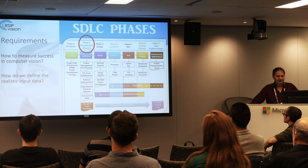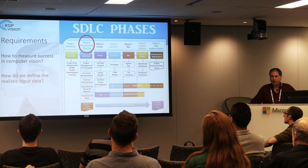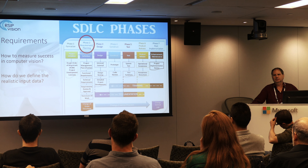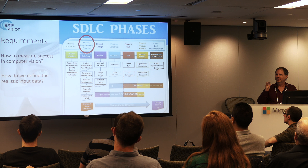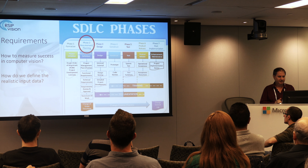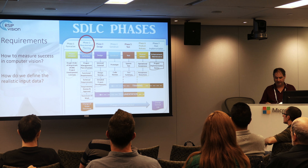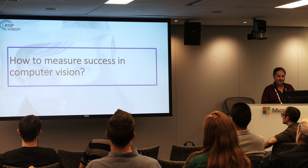One of the first moves in project management is to define requirements — the basic foundation of every project. Here in the first stage we see that we deviate from other projects, because if we have a project like a database or GUI, it is much easier to get a very precise and ordered definition. When we get to computer vision, the first question is how do we measure success and how we define realistic input for our problem.